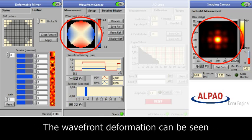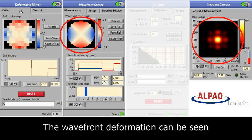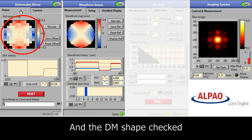We can also change the shape of the deformable mirror by applying a Zernike mode such as astigmatism.